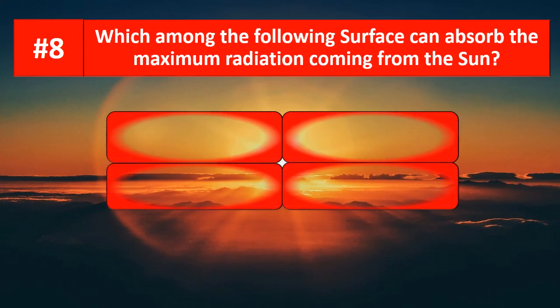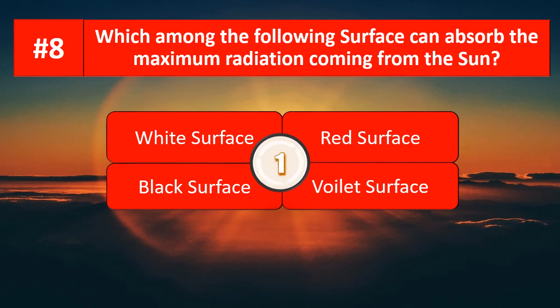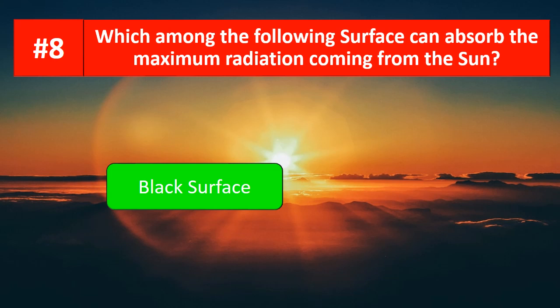Which among the following surfaces can absorb the maximum radiation coming from the sun? The options are white surface, red surface, black surface, or violet surface. The correct answer is the black surface, as it can absorb the maximum radiation coming from the sun.